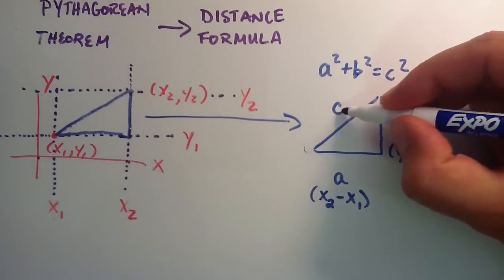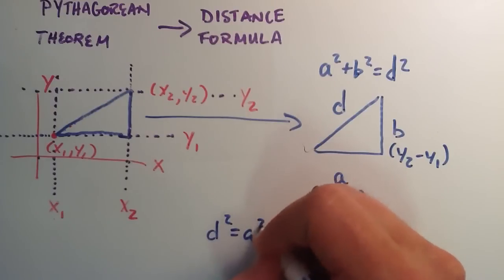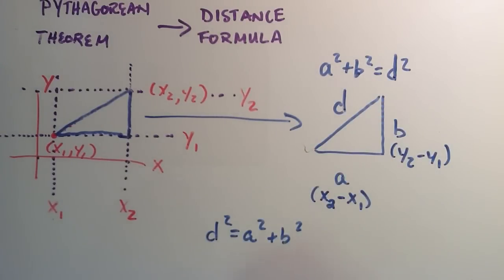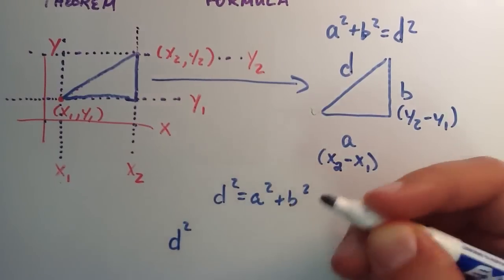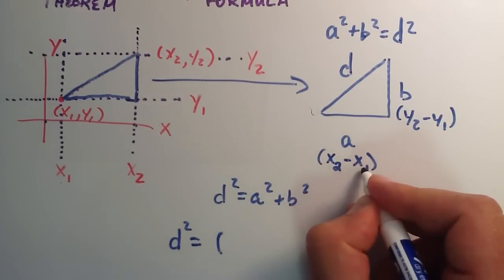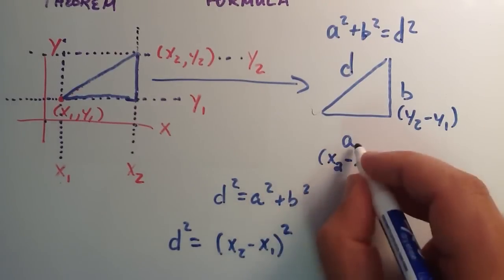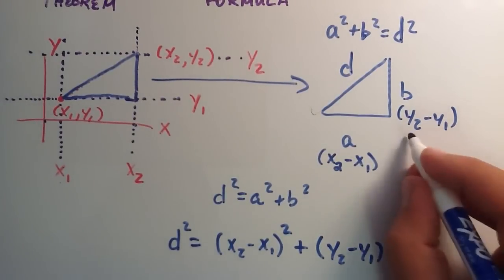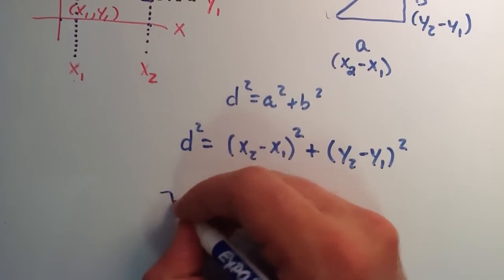Because it's distance, let's rename c to d for distance. So we rewrite this as d squared equals a squared plus b squared. Now substituting in terms of x and y: d squared equals x2 minus x1, quantity squared, plus y2 minus y1, quantity squared. Since x2 minus x1 equals a, and y2 minus y1 equals b. Then we simply take the square root of both sides.